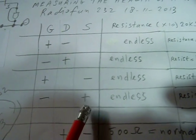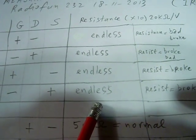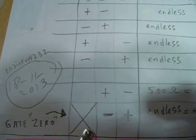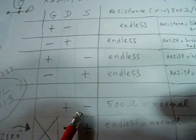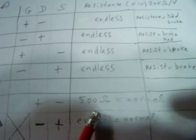Negative to the gate, positive to the source, endless resistance. Positive to the gate, negative to the source, 500 ohms. And that's normal.